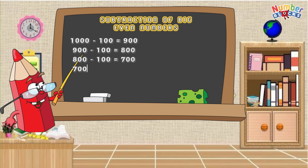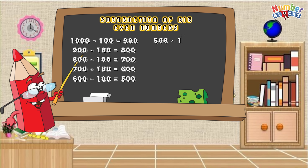700 minus 100 is equal to 600! 600 minus 100 is equal to 500! 500 minus 100 is equal to 400!